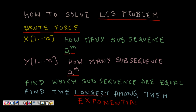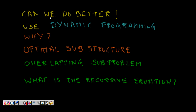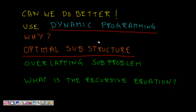The question is: can we do better? Yes, we can use dynamic programming. We can use DP because the problem follows optimal substructure: if we know the LCS for half of each string, we can construct the solution for longer arrays. There are also overlapping subproblems due to the recursive structure.